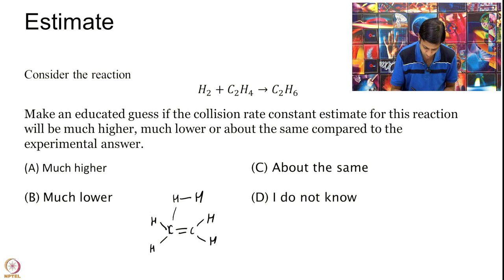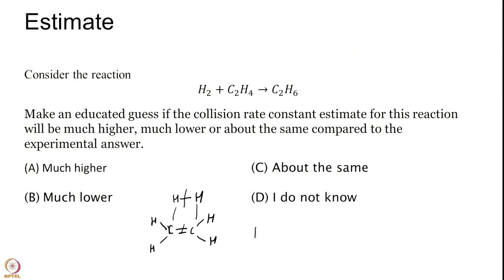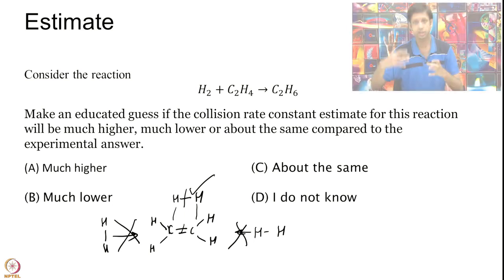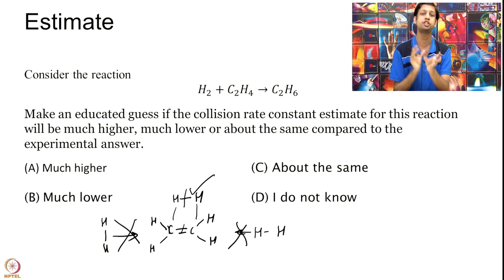But the point is that H2 must come in a very specific direction for a reaction to happen. H2 has to come in this fashion, this bond has to break and this bond has to break. If H2 approached in this fashion, nothing would happen. This is the reactive orientation. But collision theory considers all of them to be equally reactive. Collision theory does not understand which direction the collision is happening from. All directions are equally good.